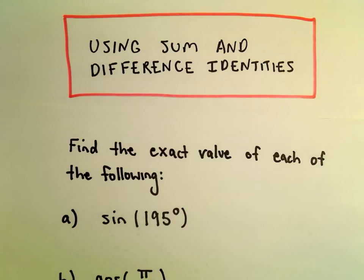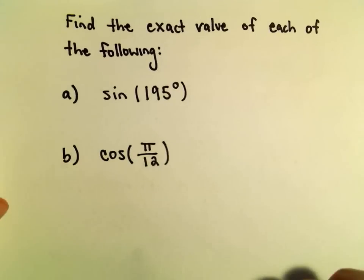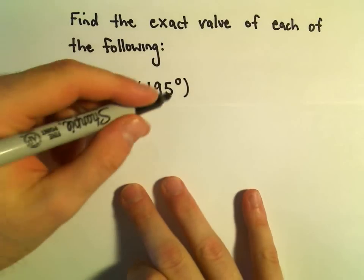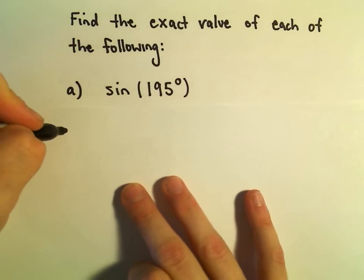In this video I want to do another example of using sum and difference identities to find a value of a trig function. So suppose we want to evaluate sin(195°). Sometimes the tricky part is just finding out how to write this as a sum of angles that we already know.